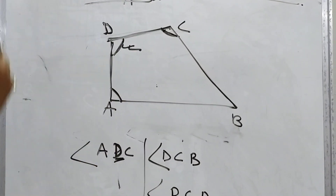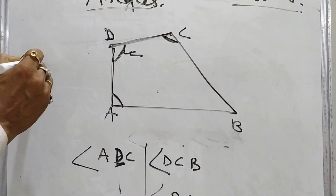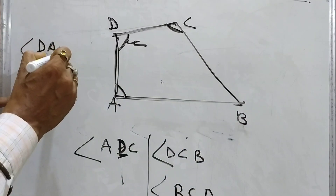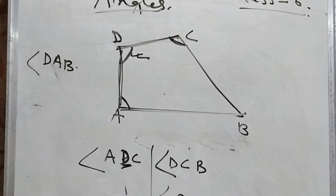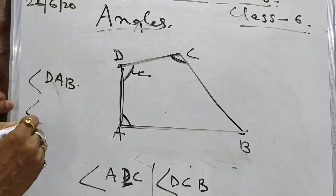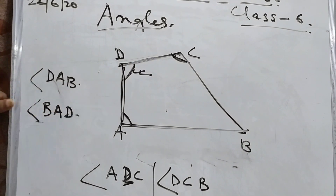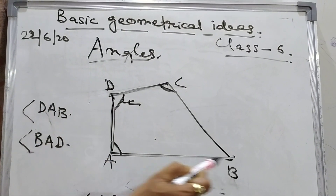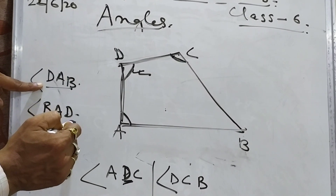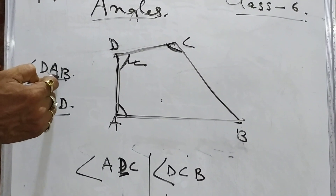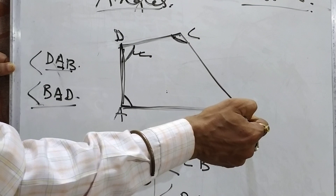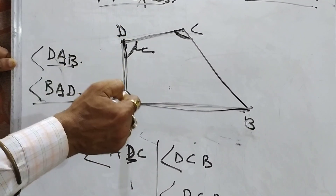Suppose I have to represent this angle — I will represent it as angle DAB. D, A, B — in this way I will represent. The same thing I can represent as angle BAD. Either DAB or BAD you can write, because in both cases A is in the middle. So you can say DAB or BAD — that means this angle is represented.